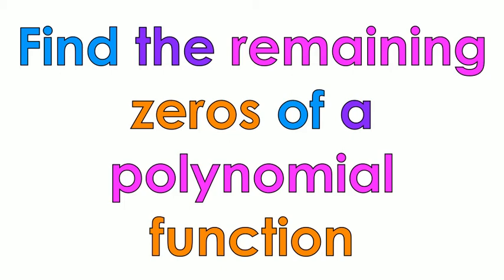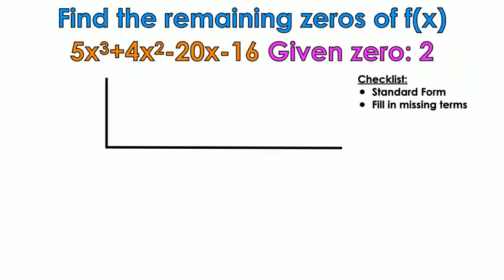So find the remaining zeros of a polynomial function. The first thing you need to know is the fundamental theorem of algebra states that the degree of a polynomial tells me how many zeros the polynomial is going to have. In this case I have a degree 3, so that means there are 3 total zeros for this problem. They gave me the first zero and it's 2, so I have to find the other 2 to make up 3.